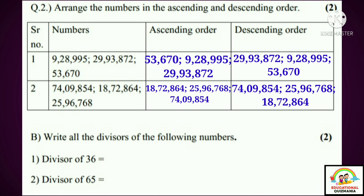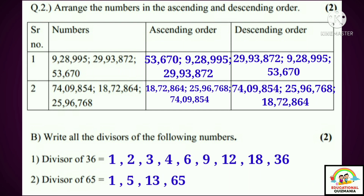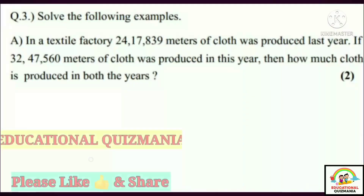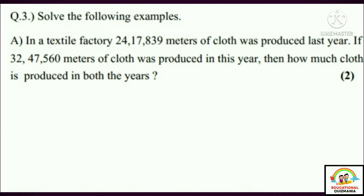Part B: Write all the divisors of the following numbers. One: divisors of 36 are 1, 2, 3, 4, 6, 9, 12, 18, 36. Two: divisors of 65 are 1, 5, 13, 65.